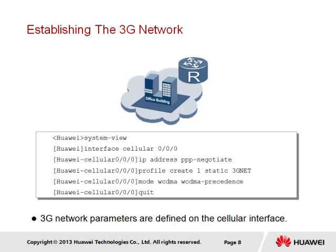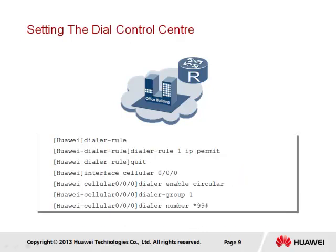We state that WCDMA networks should be preferentially used as opposed to GSM networks. The alternative mode involves using the CDMA2000 standard. We are able to use a dialer rule in order to initiate the connection that allows traffic to be carried over the 3G network. This is configured as part of the dial control center that manages the activation of the connection over the 3G network, and the dialer rule defines that the connection will support IP traffic, following which we configure parameters for the interface.